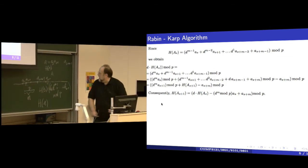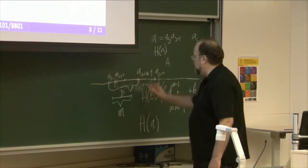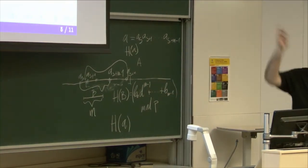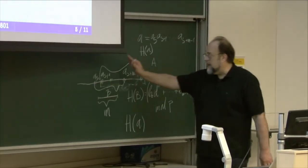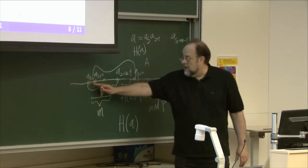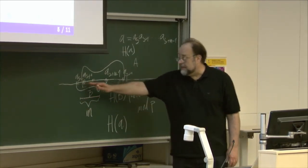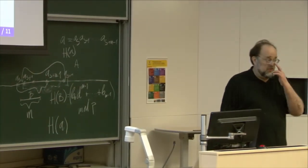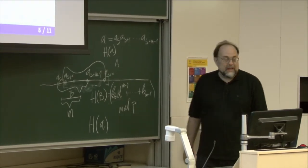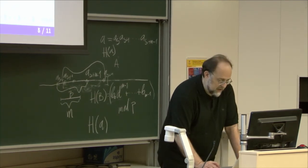So this recursive computation means: if you find the hash value of one window, you can easily find the hash value of the next with only a few operations. Only computing the very first hash value takes some time, as you must bootstrap the whole procedure. You do the same for b, and after that it's an extremely fast search.